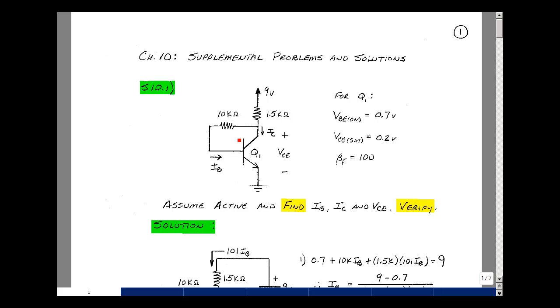Given this transistor circuit, with the parameters for the transistor of VbOn equal 0.7, VcE sat equal to 0.2, and BetaF equal to 100,